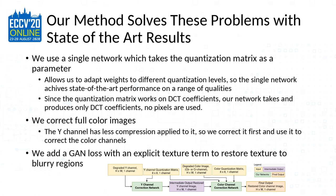Next, we correct full color images. The Y channel has less compression applied to it, so we correct that first, then use it to guide correction of the two color channels, which are much more heavily compressed. Finally, we add an additional GAN loss with an explicit texture term, intended to restore texture to blurry regions and sharpen edges.